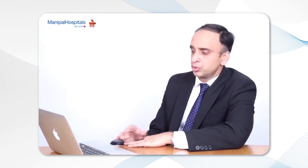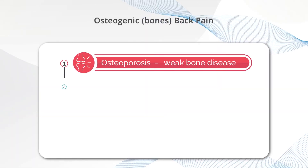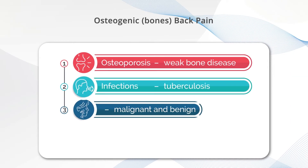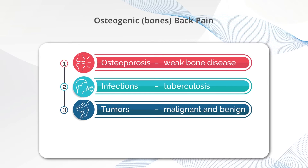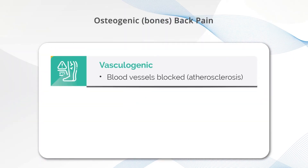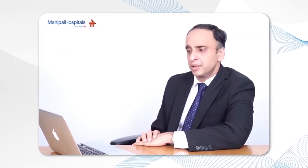Osteogenic back pain can be because of osteoporosis — that is weak bones — or infection like tuberculosis or other infections. Tumors, cancers, and malignancies can also cause back pain, and fractures can also lead to back pain. There are also rare causes — vasculogenic, viscerogenic, and psychogenic. That is about the causes of back pain.